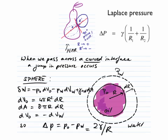This jump could be positive or could be negative. But there will be a pressure difference if I go across an interface that is curved. And the definition of Laplace pressure is given in the equation that's typed out.